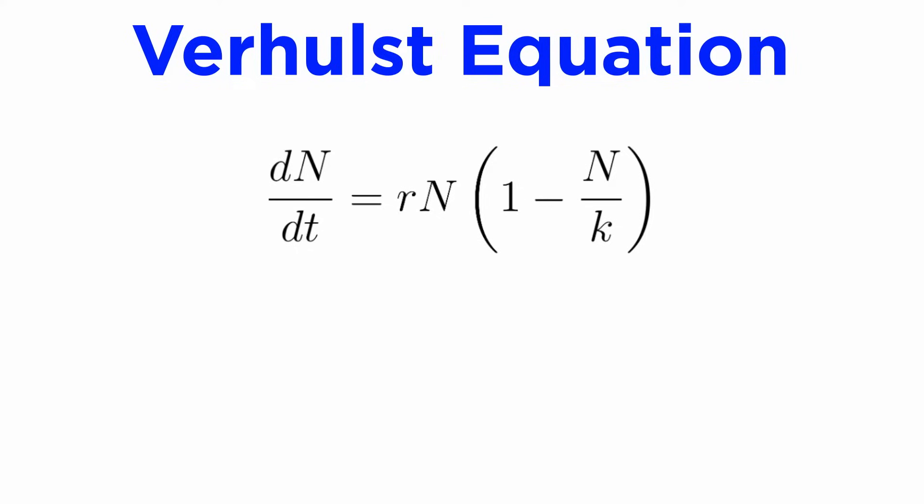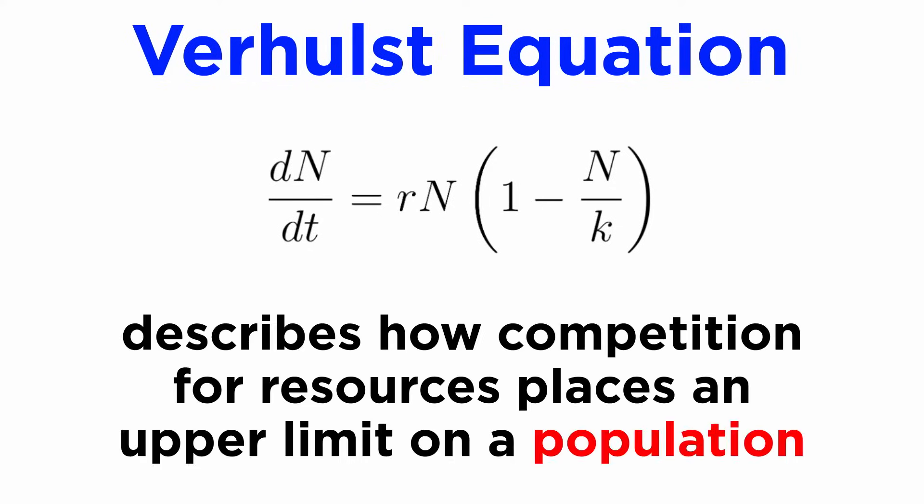In demography, which is the study of human populations, the Verhulst equation describes how competition for resources places an upper limit on the number of people who can be safely sustained within a civilization.